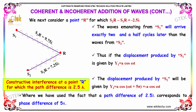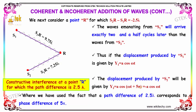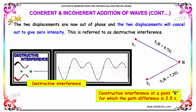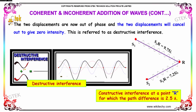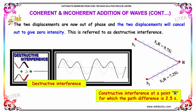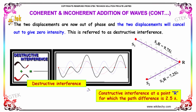At point R, where the path difference is 2.5 lambda, we have used the fact that a path difference of 2.5 lambda corresponds to a phase difference of 5π. The two displacements are now out of phase, and they will cancel out to give zero intensity. This is referred to as destructive interference — the waves are completely out of phase.